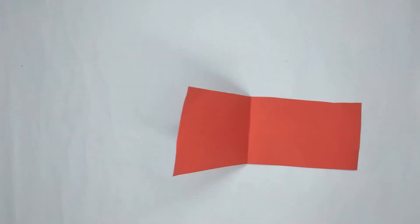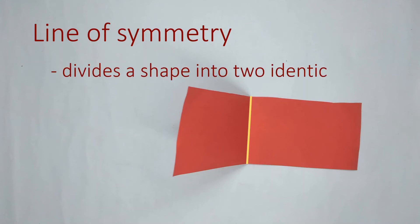Folding the rectangle into two equal parts creates a line of symmetry or an axis of symmetry. Here. An axis of symmetry divides a shape into two identical, or symmetric, parts.